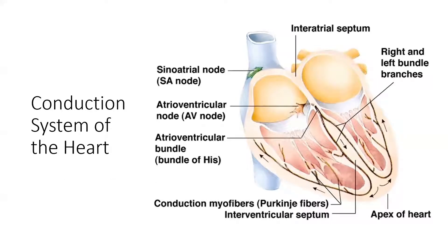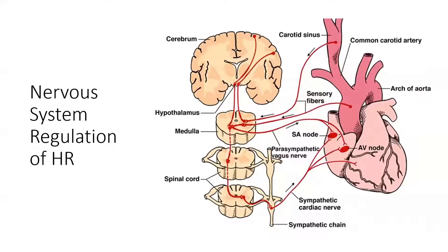Our heart functions through electrical impulses. The SA node, or sinoatrial node, initiates the cycle of heart contractions, which moves to the atrioventricular node, then runs down through the bundle of His into the Purkinje fibers. The sinoatrial node is what stimulates or initiates the heart to beat. Our nervous system can also regulate heart function through the autonomic nervous system.